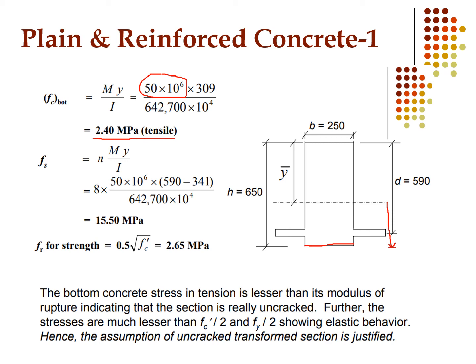For stress at the reinforcement level, we use Fs = n × MY/I, where n = 8, M = 50 × 10⁶ N·mm, and Y = 590 − 341 = 249 mm. We get stress at the level of steel Fs = 15.50 MPa.